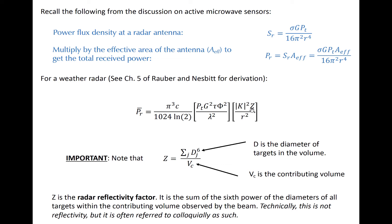The radar reflectivity factor is denoted by Z and is perhaps the most important variable that radar meteorologists consider. It is often simply referred to as reflectivity by many people. It is related to the sum of the sixth power of all the diameters of all the targets in a contributing volume.